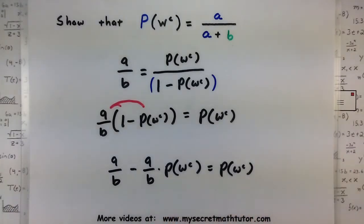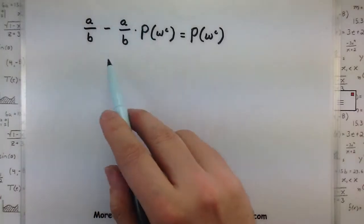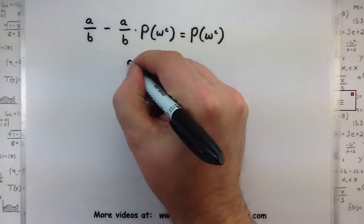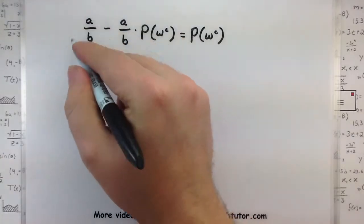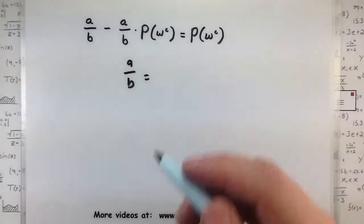So I get A/B minus A/B multiplied by probability of not winning equals probability of not winning. So that's a little bit closer. We want to get these guys together, and we can definitely do that.